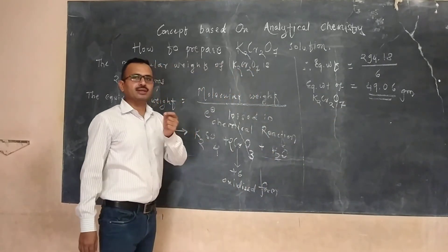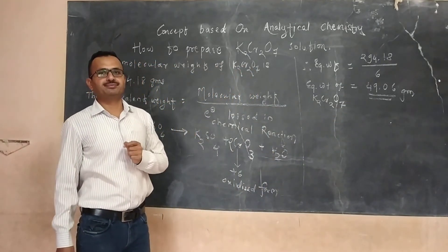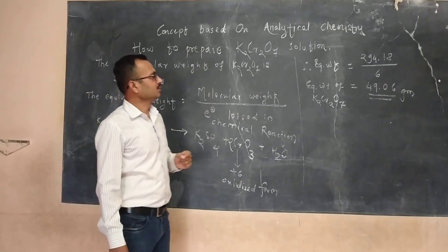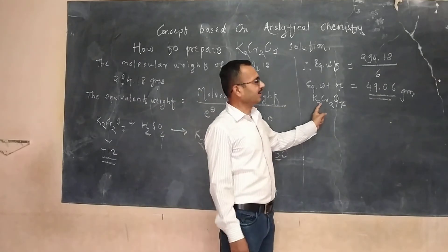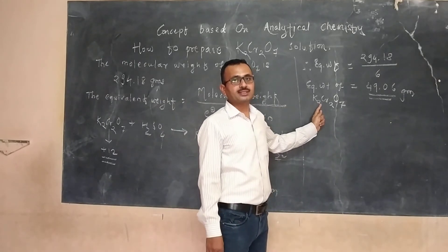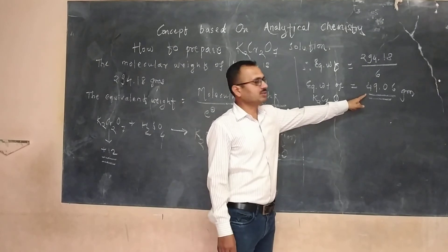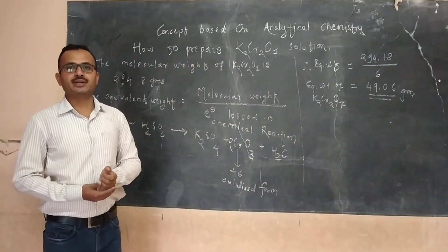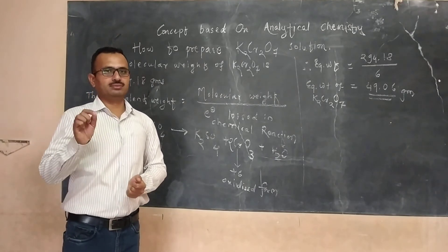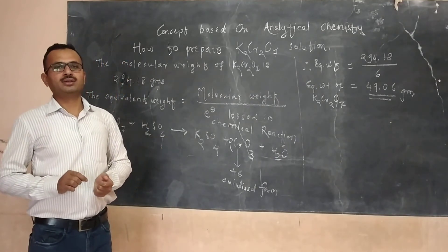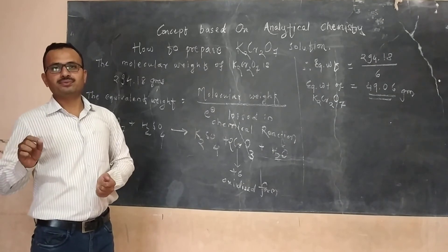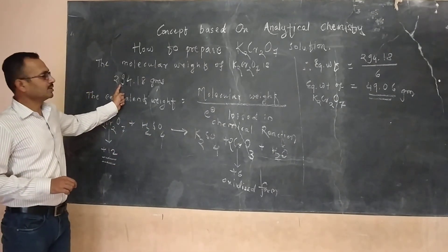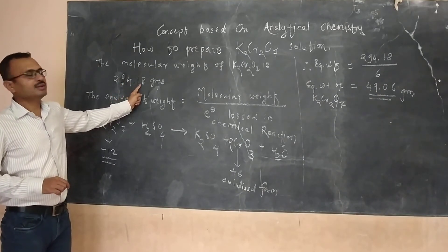If we go to the normality for the normal solution, we take the weight of the potassium dichromate as the equivalent weight, 49.06. And if we have to prepare the molar solution, then we go with molecular weight. Molecular weight is 294.18 grams.